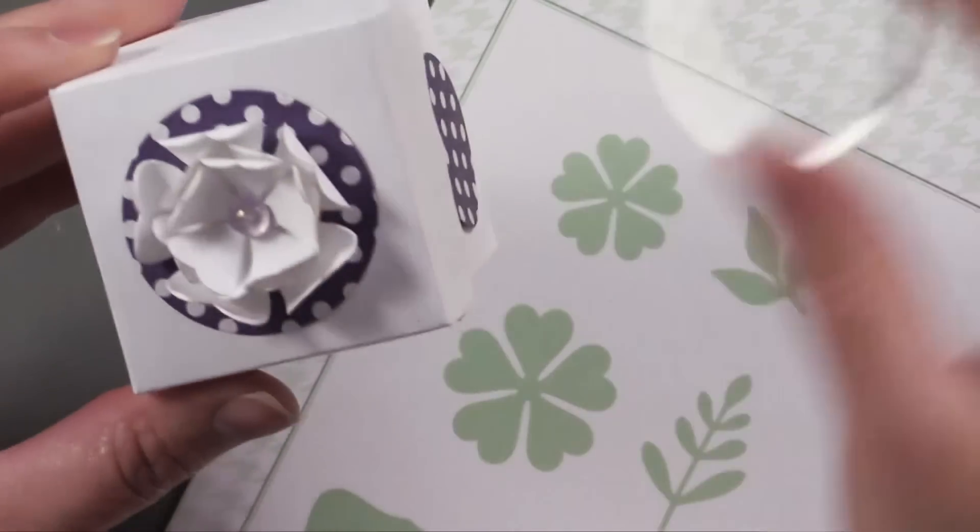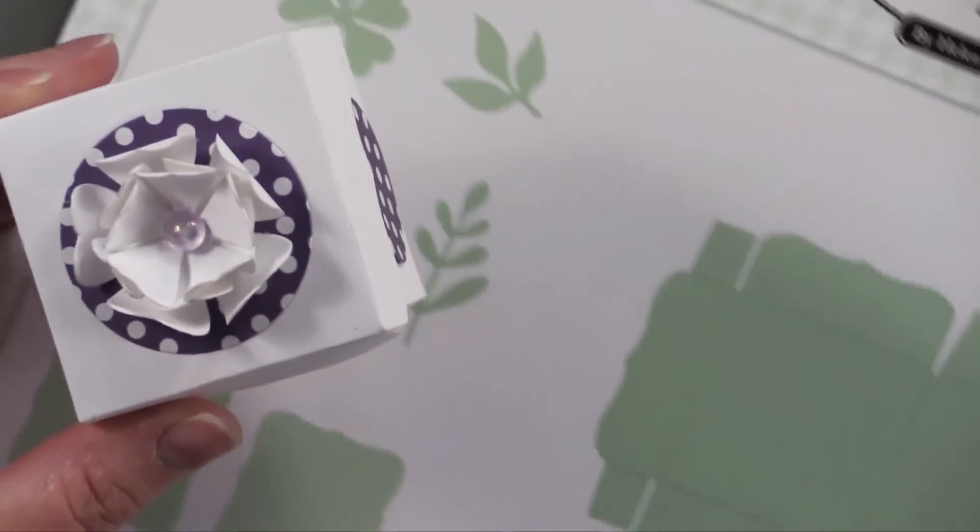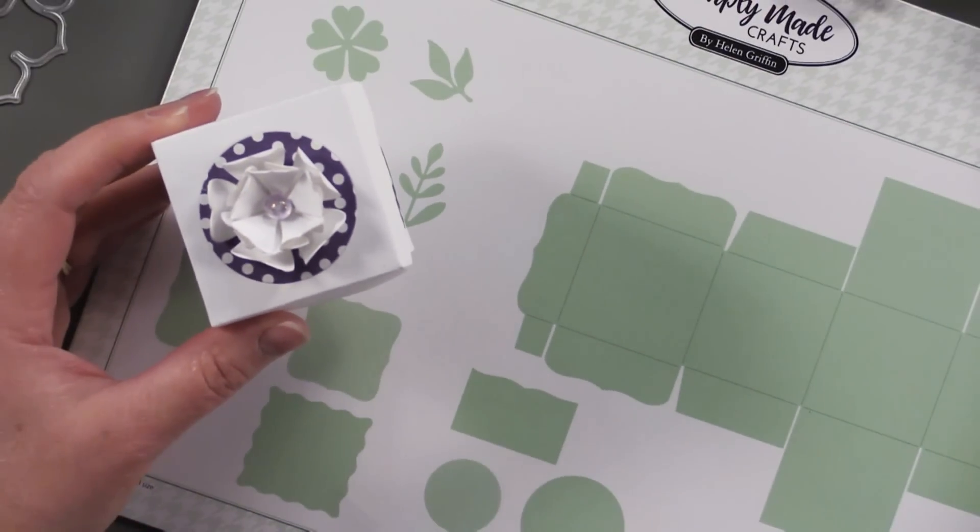And I used to decorate the sides from Dotted Duo's paper pack number one from Hot Off the Press. I just used the circles that came with the dies. So thanks for joining me today.